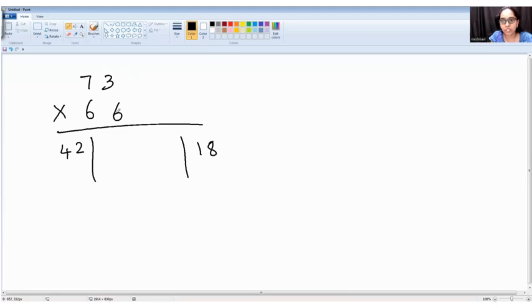7 into 6 is again 42 plus 3 into 6 is 18. So it is 42. Then it is 60. And it is 18.